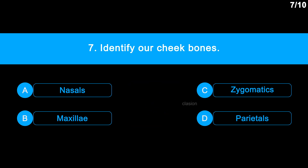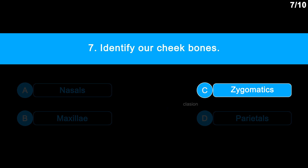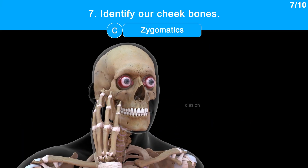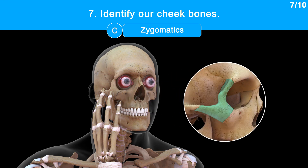The correct answer is Option C: Zygomatics. Just touch your cheeks. These are diamond-shaped bones below and lateral to the orbit or eye socket, at the widest part of the cheek.